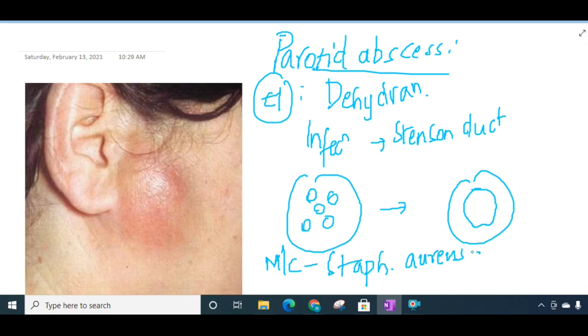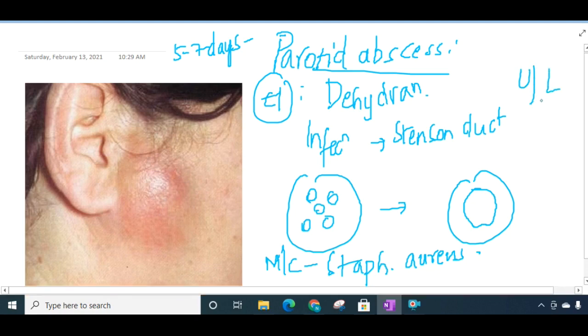This parotid abscess occurs most commonly four to seven days after surgery. The patient presents with swelling and redness in the parotid area and at the angle of mandible. The parotid abscess is usually unilateral, but sometimes bilateral abscess can also occur.